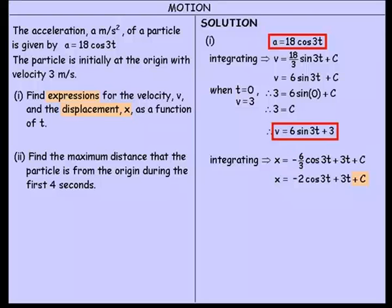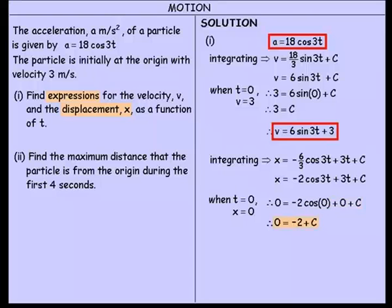We need to find the constant of integration. The problem states the particle is initially at the origin — when t equals 0, x equals 0. Substituting: 0 equals minus 2 times cos of 0 plus 0 plus c. Be very careful — cos of 0 equals 1, so we have minus 2 plus c. Therefore c equals 2. Substituting back gives the displacement equation x equals minus 2 cos 3t plus 3t plus 2.